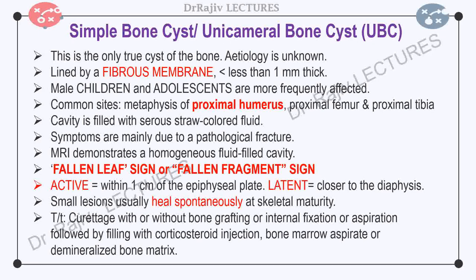Simple bone cyst is also known as unicameral bone cyst. This is the only true cyst of the bone. The cyst cavity is lined by a fibrous membrane, usually less than 1 mm thick, composed of fibroblasts. Males are more frequently affected and most cases occur in the proximal long bones of children and adolescents, i.e., in the first two decades of life. Proximal humerus, proximal femur, or proximal tibia are commonly affected. In adults, it is more common in the ileum and calcaneus.